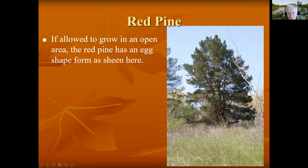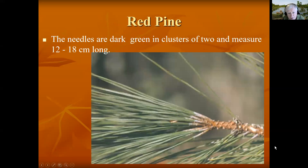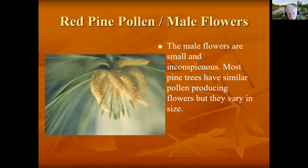The red pine shape is roughly egg-shaped when growing in the open. Needles are long, in groups of two, 12 to 18 centimeters long. The male cones are small, soft cones that emit the pollen. You can even see some of the pollen coming out here.